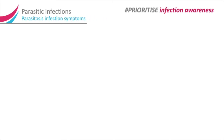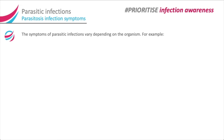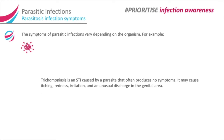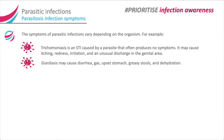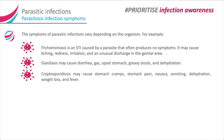The symptoms of parasitic infections vary depending on the organism. For example, trichomoniasis is an STI caused by a parasite that often produces no symptoms, but may cause itching, redness, irritation and an unusual discharge in the genital area. Giardiasis may cause diarrhea, gas, upset stomach, greasy stools and dehydration. Cryptosporidiosis may cause stomach cramps, stomach pain, nausea, vomiting, dehydration, weight loss and fever.